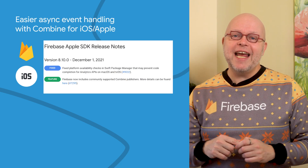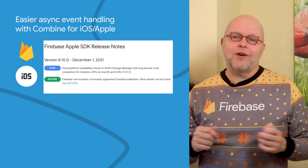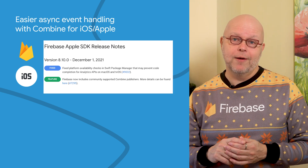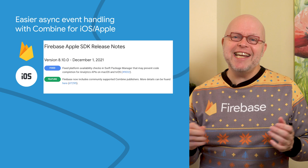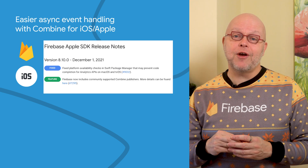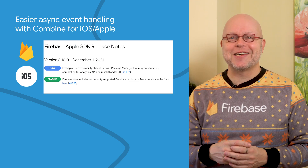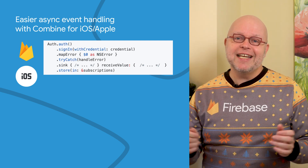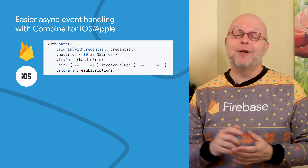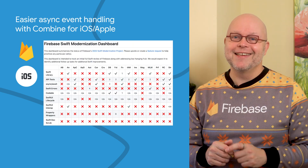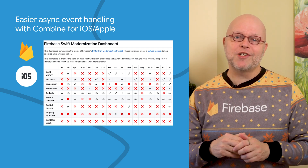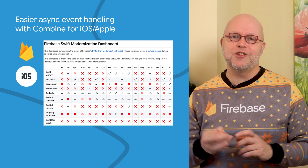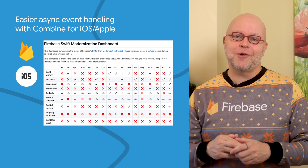Version 8.10 of our SDK for iOS and other Apple platforms now includes community support for Apple's Combine framework, which makes it easier to handle asynchronous events in your code by combining event processing operators. Thank you to everyone who contributed to this feature — see the GitHub project at the link below for full details. If you want to learn more about what's coming up in our SDK for iOS and other Apple platforms in 2022, have a look at the project page that I also linked.